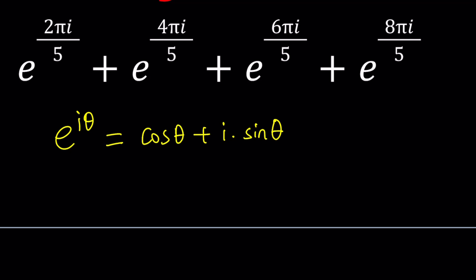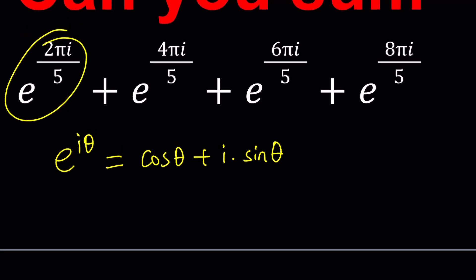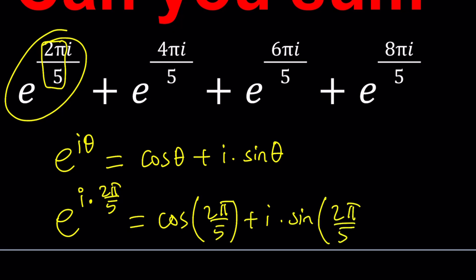So our goal is to get to this sum. Let's go ahead and go with the first one first. In this case, if you separate the i, you notice that θ is 2π over 5. So if you go ahead and replace θ with 2π over 5, you're supposed to get cos(2π/5) plus i times sin(2π/5). Great.